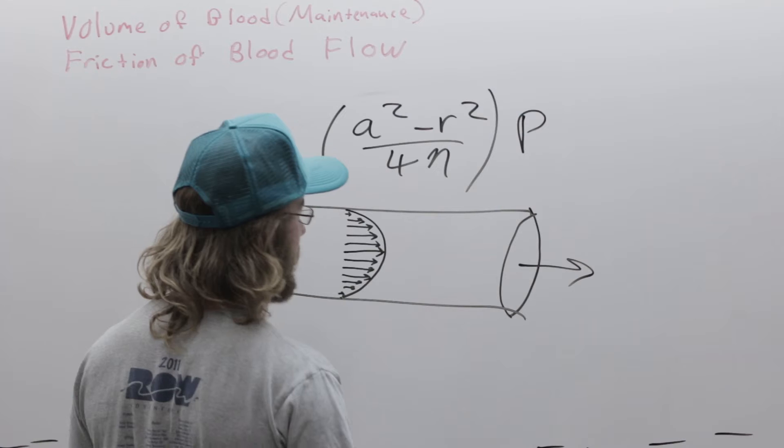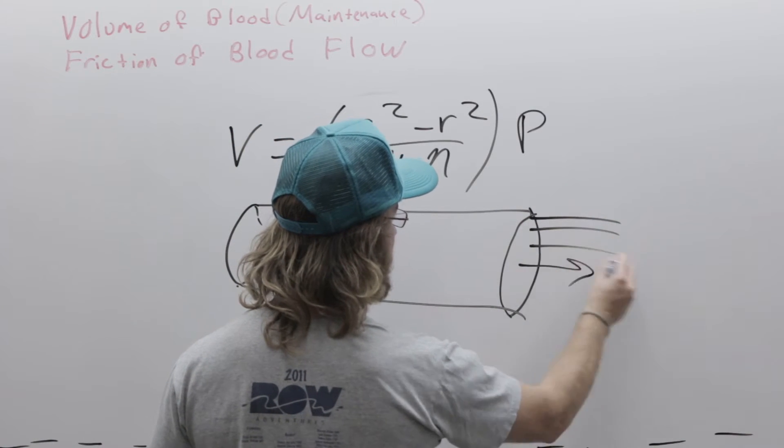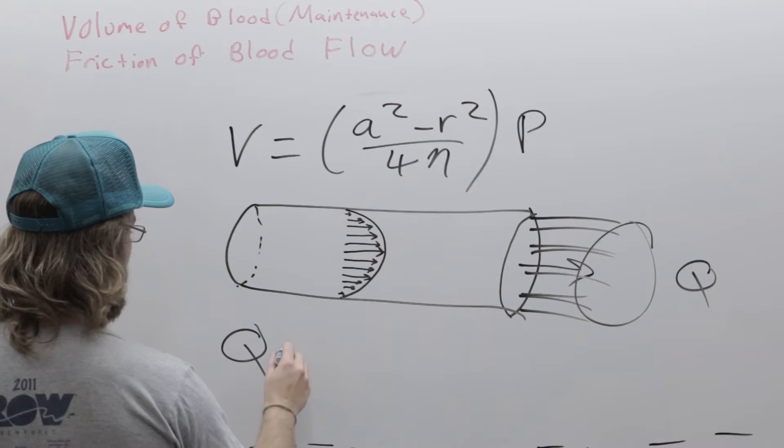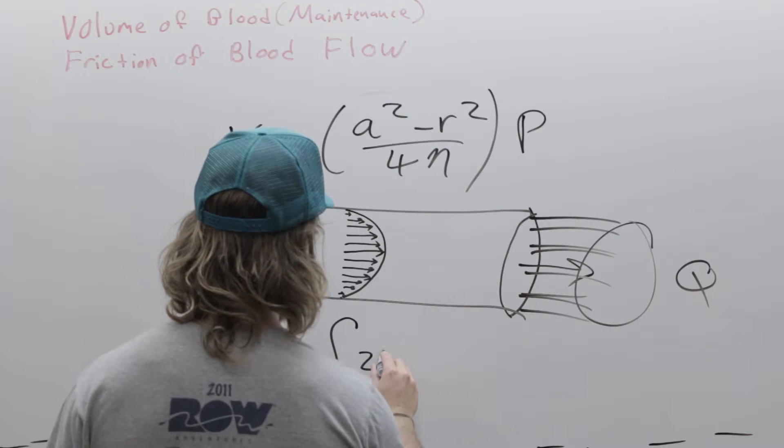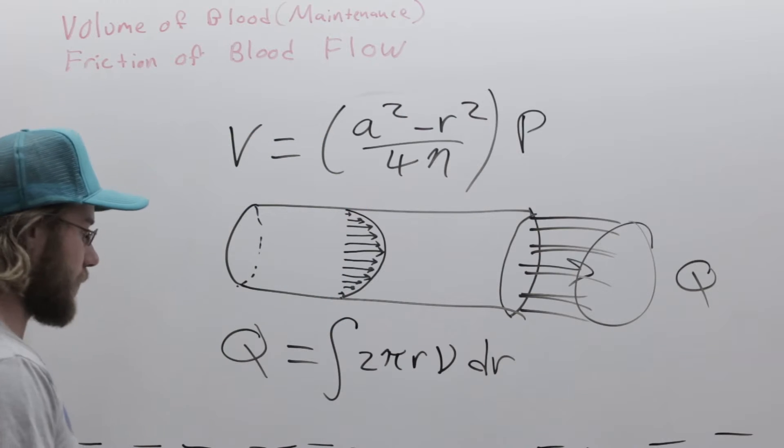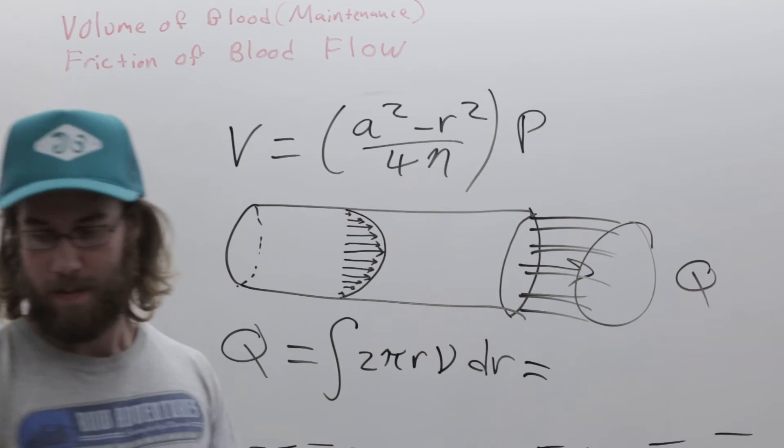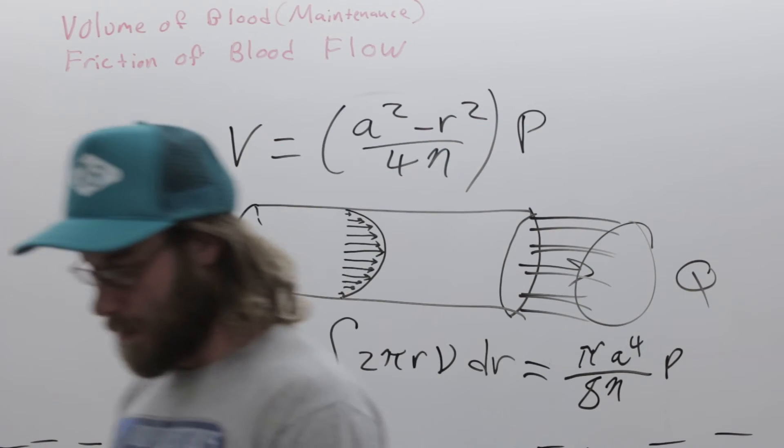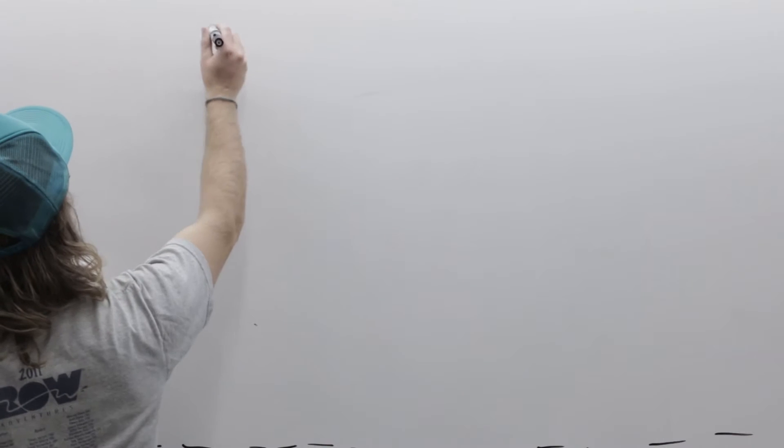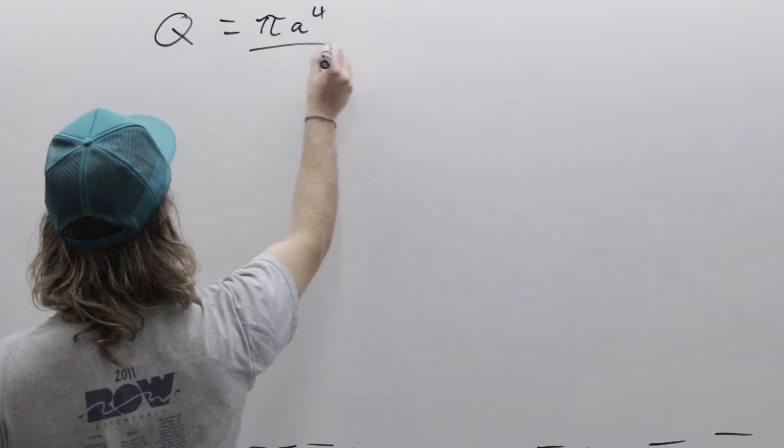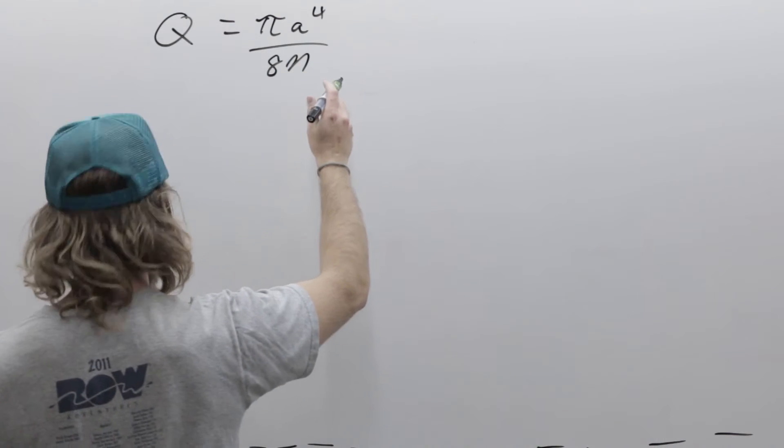So if we're interested in the total discharge rate, like how much stuff is coming out of the pipe, we'll call that q. q is going to be equal to the integral of 2πr times the velocity with respect to r. And this equals positive, and that positive pressure will make the flow flow right.